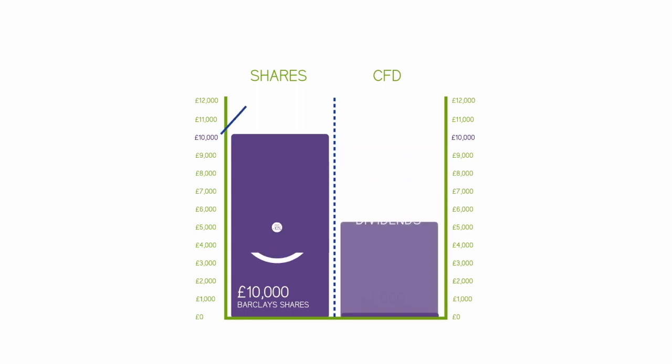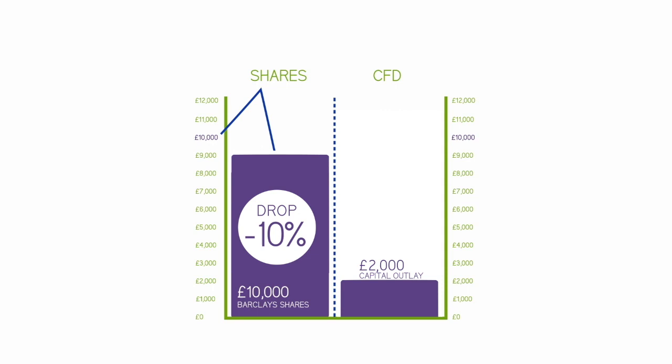So let's assume the shares dropped 10% and your position was closed out. This means that you would lose £1,000 and would have £1,000 left in your account. This is exactly the same loss that you would incur had you invested £10,000 in conventional shares.